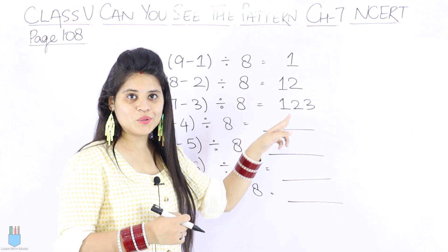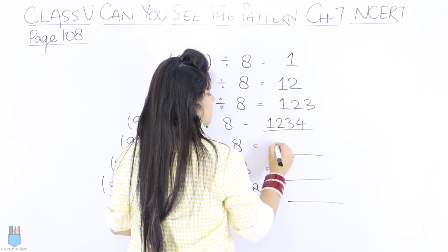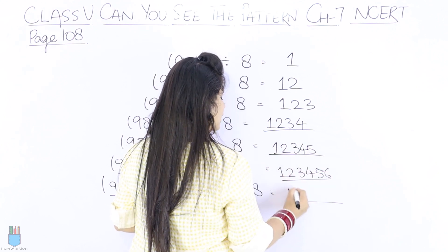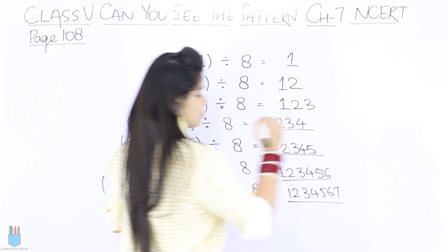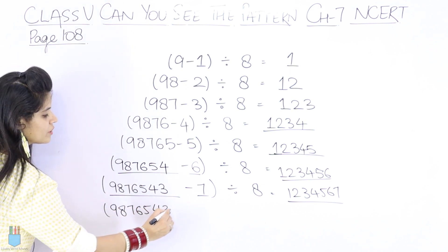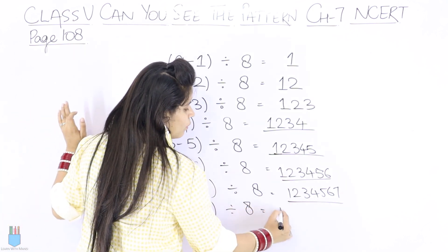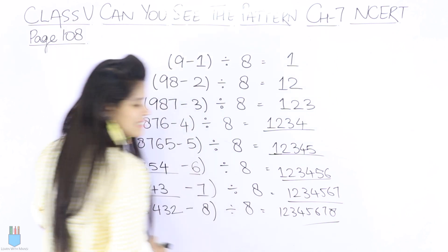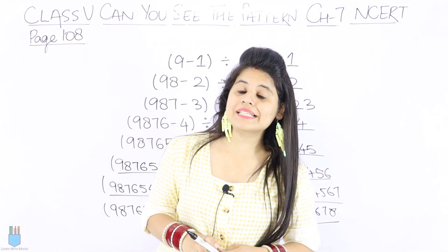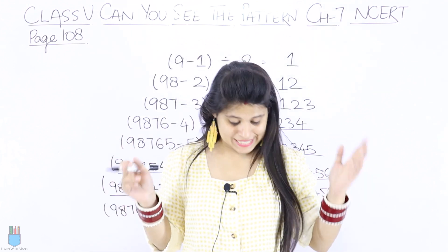Now the answer pattern: see, 1, then 1 2, then 1 2 3, then 1 2 3 4, then 1 2 3 4 5, then 1 2 3 4 5 6, then 1 2 3 4 5 6 7. Similarly, 8 7 6 5 4 3 2 1. Then continuing the pattern with 8, 9, 10, 11, 12.